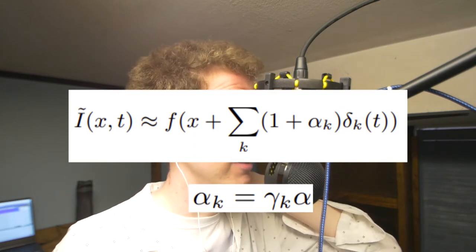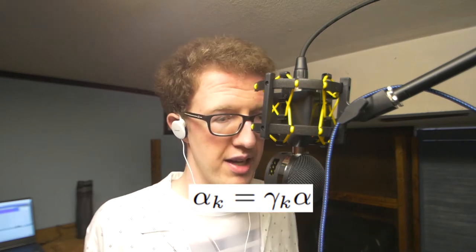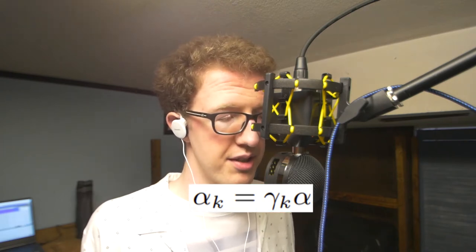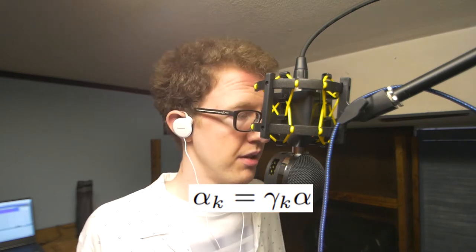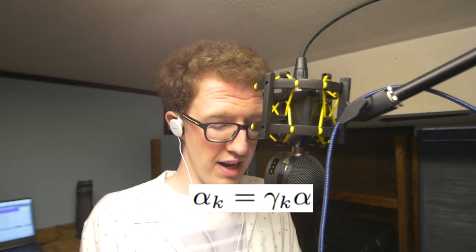...multiplied by gamma sub k, which is an attenuation factor. This attenuates the different temporal frequencies that we want to magnify. There are many different temporal filters you can use in this algorithm.